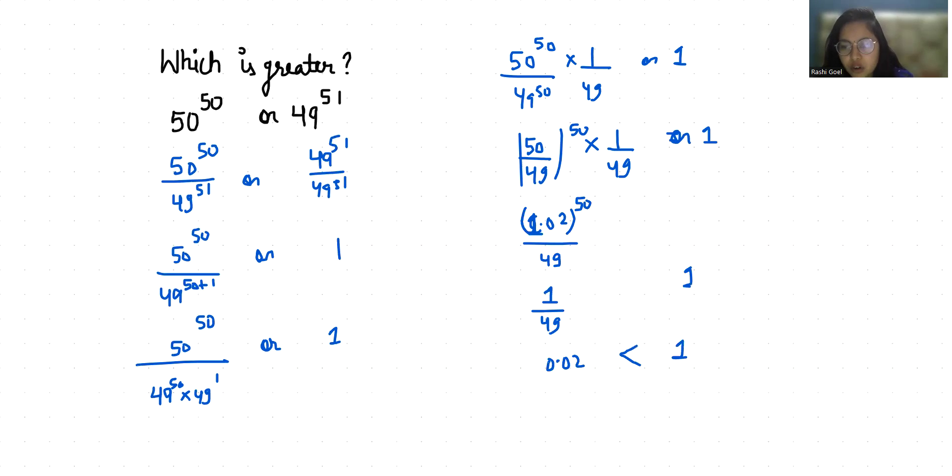So 50 power 50 by 49 power 51 is greater than 1, meaning 50 power 50 is greater than 49 power 51. I hope it's clear and you find it useful. So please give us a thumbs up and do subscribe to my channel. Stay tuned.